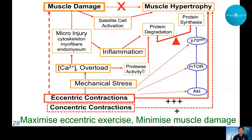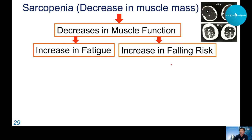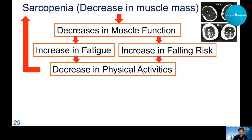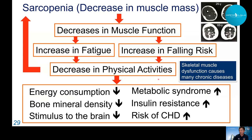With aging, muscle mass decreases — comparing a 25-year-old and 65-year-old thigh cross-section shows much less muscle mass. This leads to decreased muscle function, increased fatigue, increased fall risk, and reduced physical activity — a vicious cycle of sarcopenia. As muscle mass decreases, energy consumption decreases, leading to metabolic syndrome, increased insulin resistance, and increased risk of coronary heart disease. Skeletal muscle dysfunction causes many chronic diseases, making it essential to maintain and improve skeletal muscle.